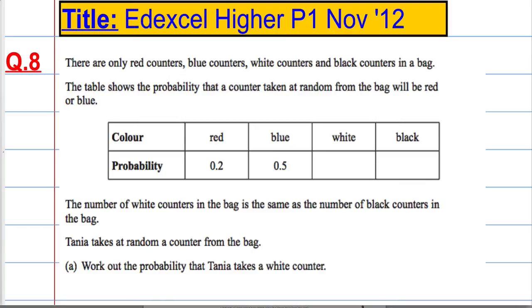So a bit of probability here. There are only red counters, blue counters, white counters and black counters in a bag. The table shows the probability that a counter taken at random from the bag will be red or blue. And it says that the number of white counters in the bag is the same as the number of black counters in the bag.